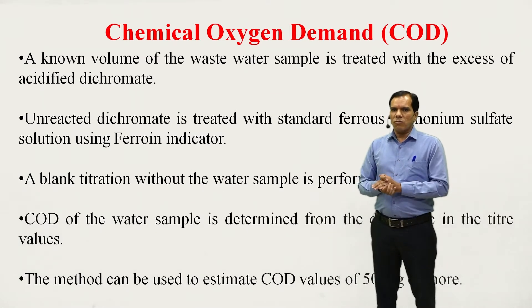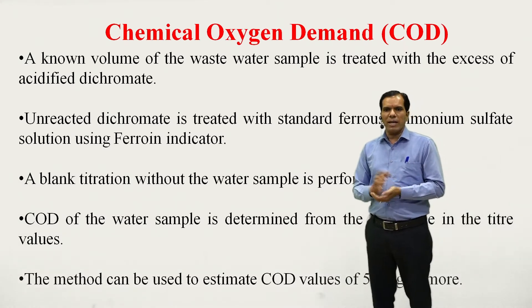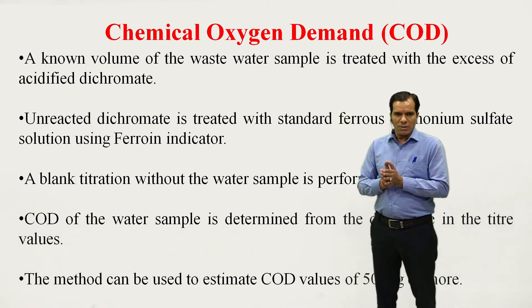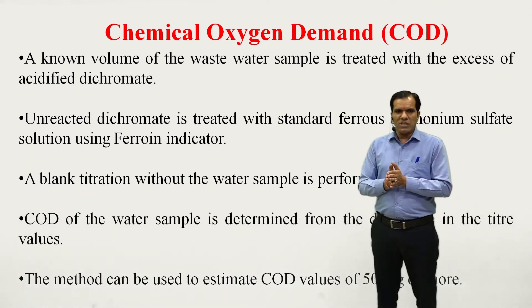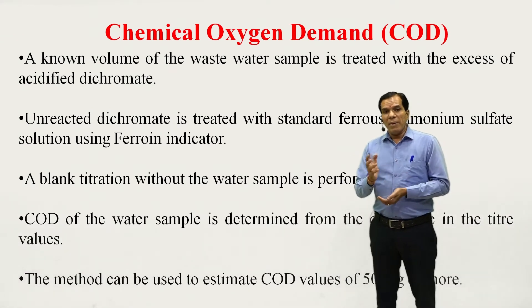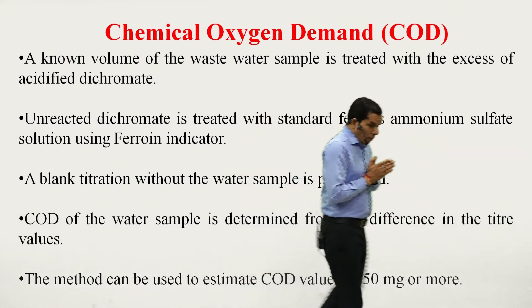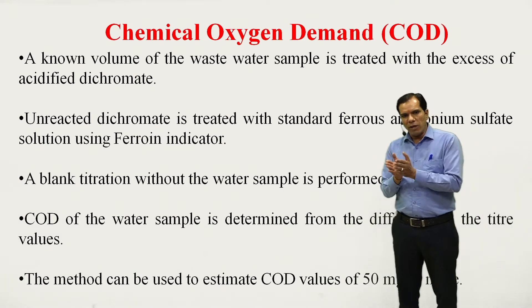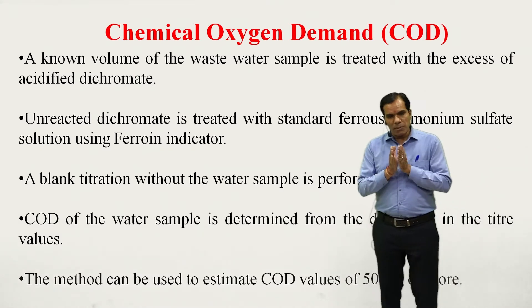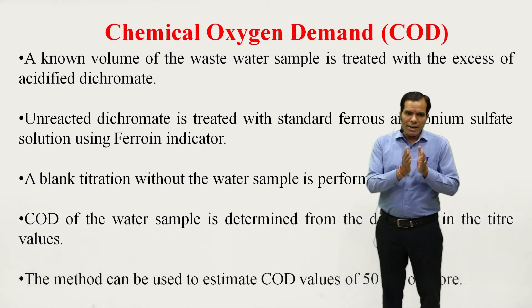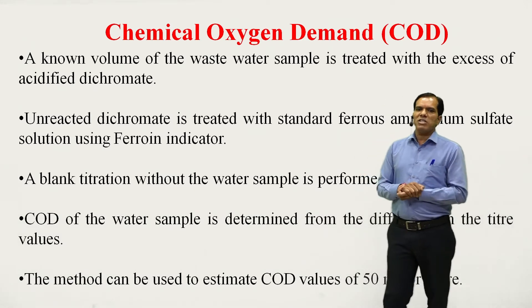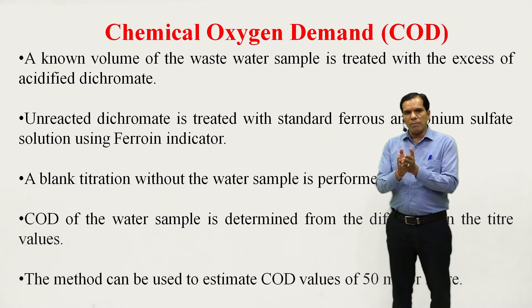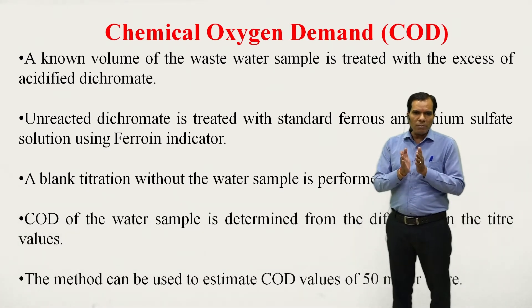A known volume of the wastewater sample is treated with excess acidified potassium dichromate solution. Unreacted dichromate is back-titrated with standard ferrous ammonium sulfate solution using ferroin indicator. A blank titration without the water sample is also performed — we compare the COD value of the wastewater with the COD value of the blank distilled water. COD of the water sample is determined from the difference in titration values between the blank and the wastewater.